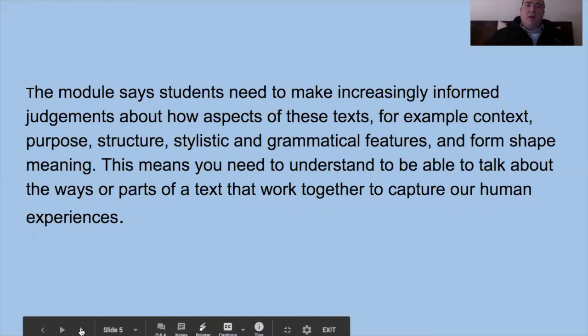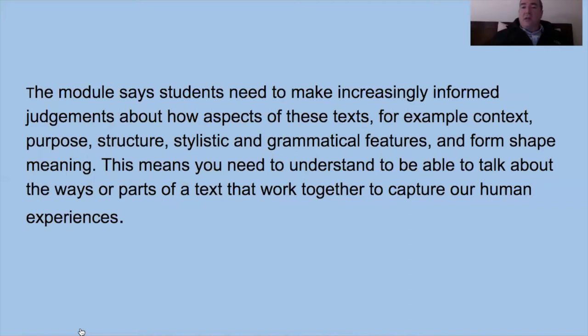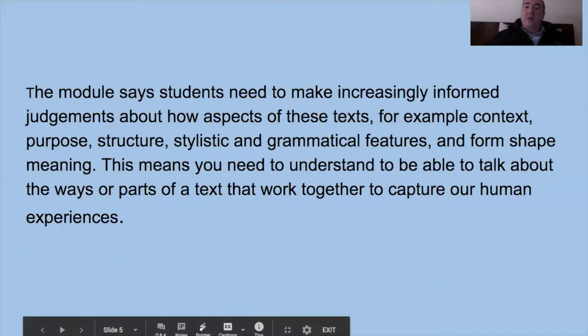The module says that you, the students, need to make increasingly informed judgments about how aspects of these texts — for example, context, purpose, structure, stylistic and grammatical features, and form — shape meaning. Put simply, the text itself and the features within the text bring about a certain meaning. You need to understand the text to be able to talk about the ways or parts of that text that work together to capture our human experiences.